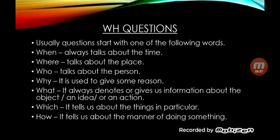Number two is WHERE. WHERE talks about the place. Whenever we want to know a place, we use WHERE. For example, we can say: 'Where are you going?' Next one is WHO. WHO talks about the person. This is always used to know about the person or people. For example, we can say: 'Who are you?' The next WH question is WHY. It is used to give some reason. Many times we have to give reasons for something, and for that we use the question WHY. For example: 'Why are you late today?'